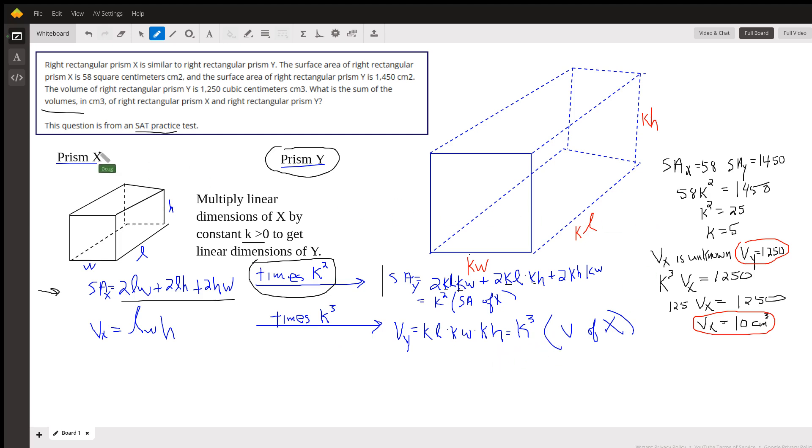So given that, here's what we know. The surface area of prism X is 58. Surface area of prism Y is 1450. I had to multiply this 58 by K squared to get the 1450.